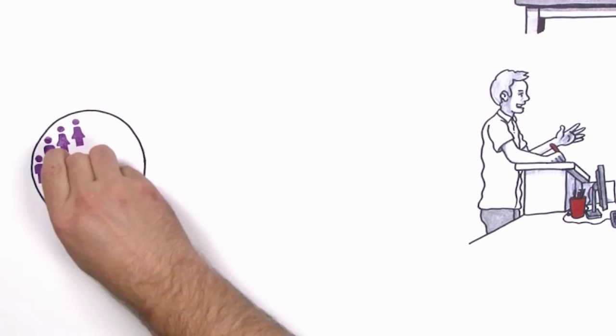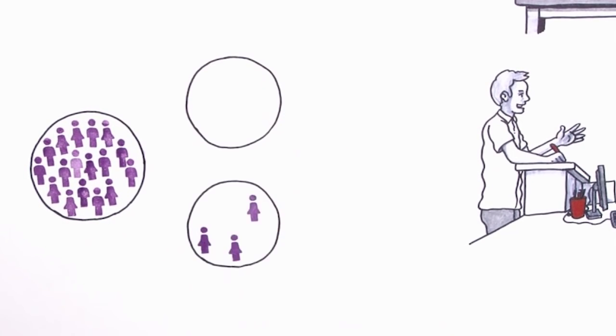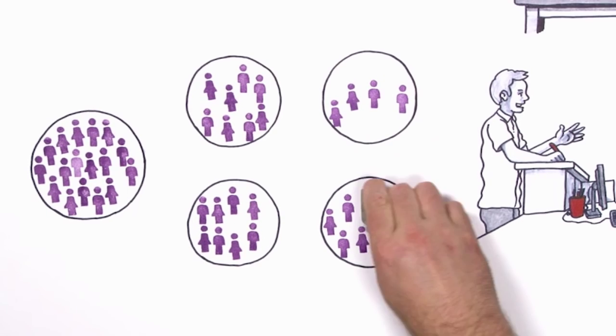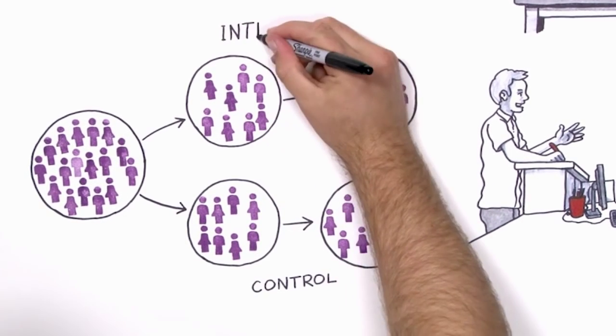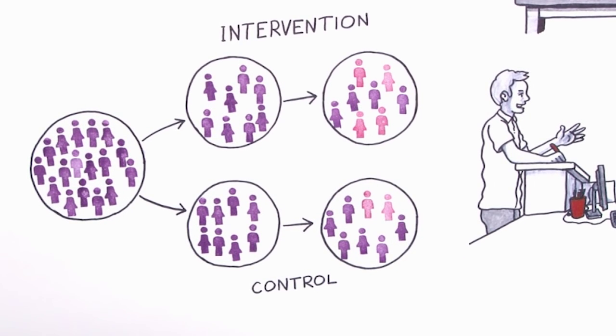We then test and trial our interventions. Wherever possible, we use randomized controlled trials to understand what works. This enables us to compare the effectiveness of an intervention against what would have happened if we changed nothing, by having a control group and different trial groups.